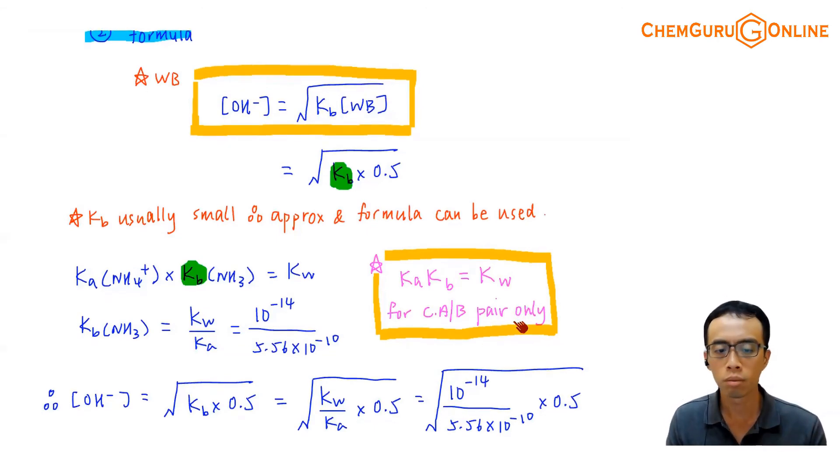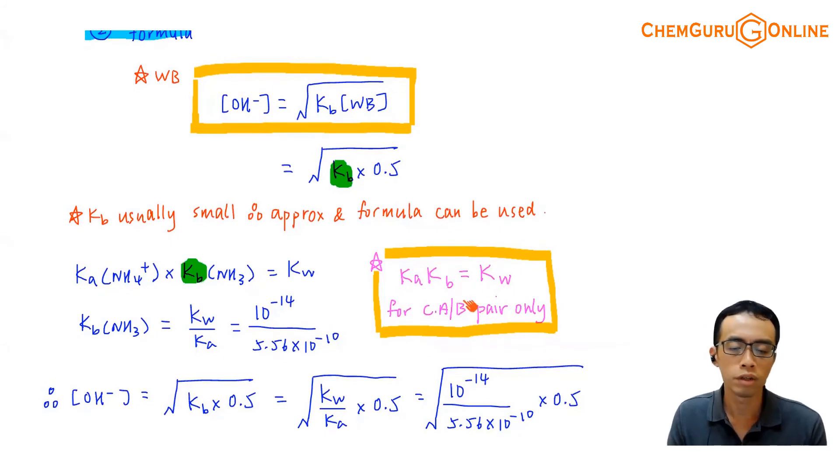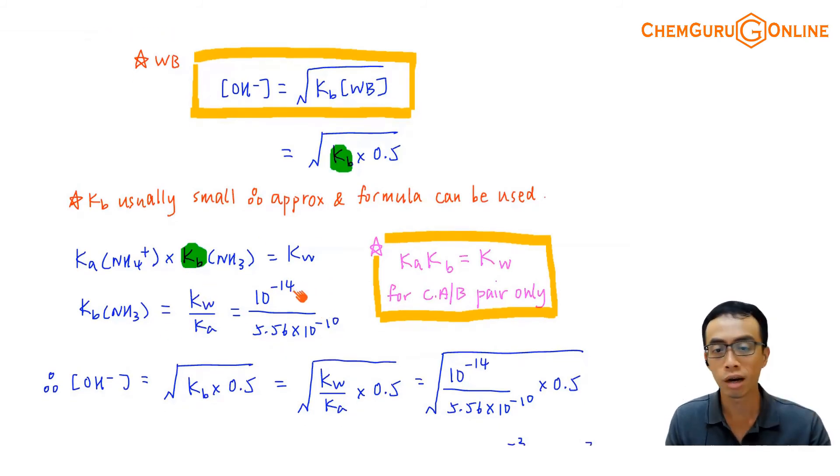For normal questions, even if you don't remember this is for conjugate acid-base pair, it doesn't give us much problem. But the concept needs to be very clear. Later when we apply this to diprotic species, we know exactly which Ka value to use. No problem for us to find Kb from the Ka of NH4+.